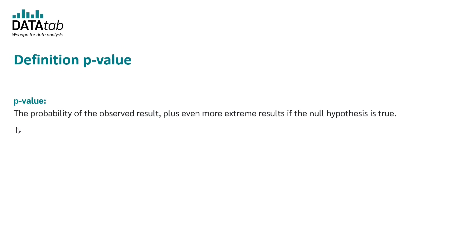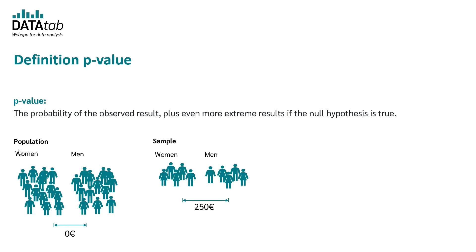Finally, we take a look at the definition of the p-value. Generally, the p-value is the probability of the observed result plus even more extreme results if the null hypothesis is true. So this might sound a bit complicated, so let's take a look at our example again. What does it mean that the null hypothesis is true?